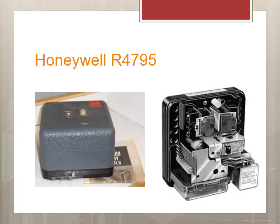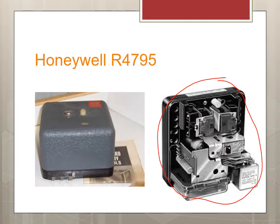Here is the Honeywell R4795 uncovered. With these controls, they usually come with a base that is mounted permanently and connected to each terminal, and the cover goes on top. There is a reset button connected here, and this cartridge is used to change timing or sequence of operation. You might see these on larger boilers.